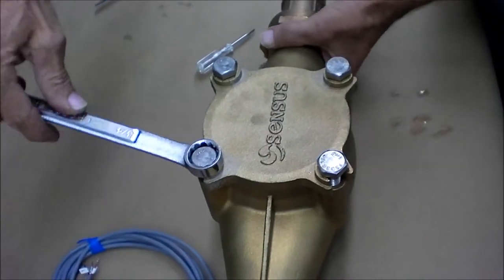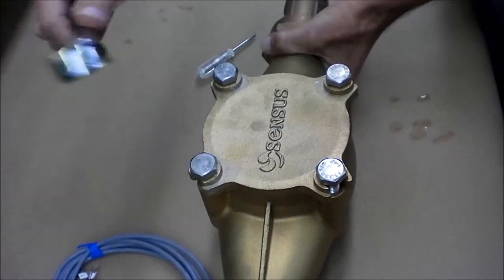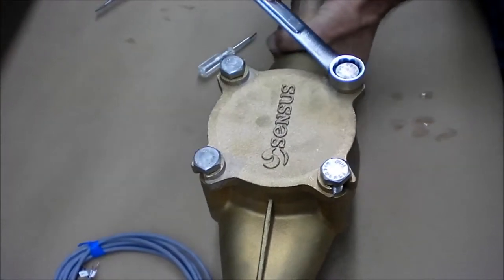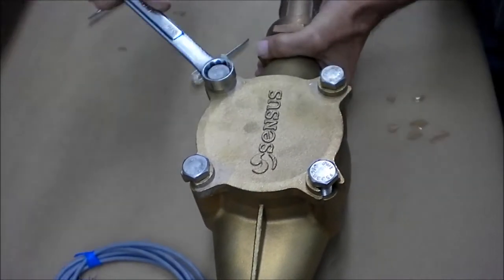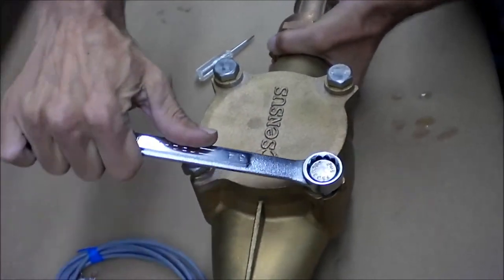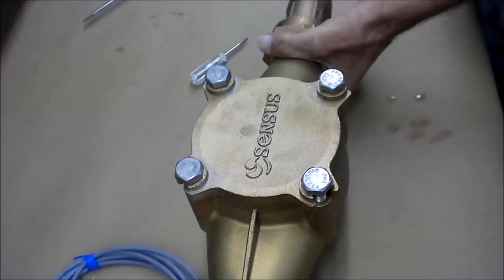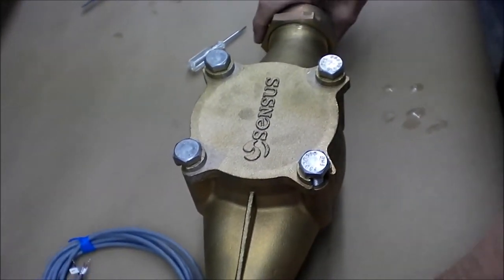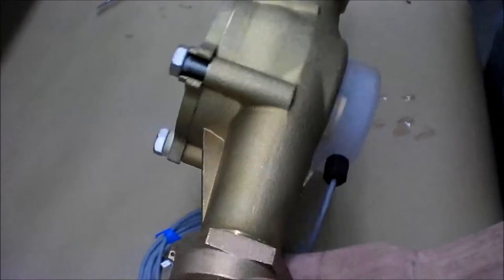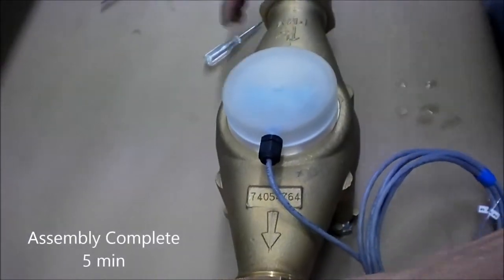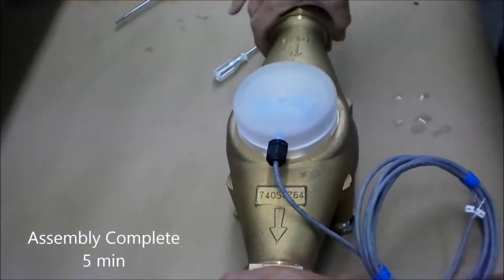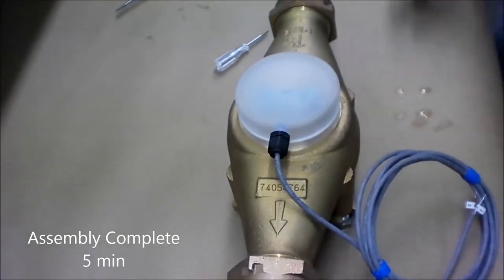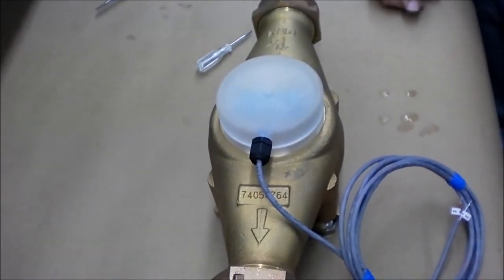These bolts need to be snug, hand tight, and then about a quarter turn on all of them. At that point, your meter is assembled. You would rotate your meter back in the correct position, tighten down your couplings, and your meter is ready to go.